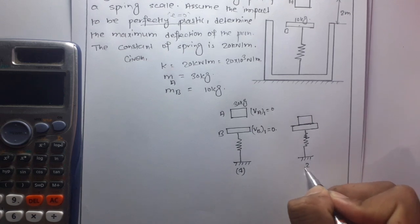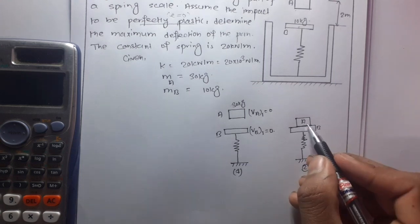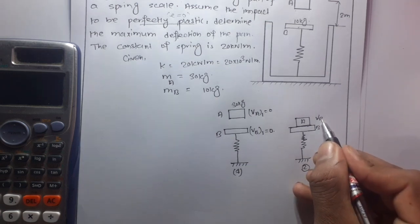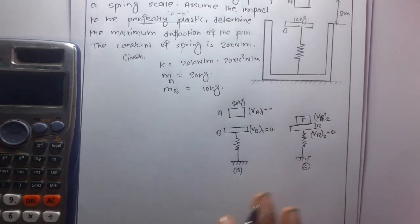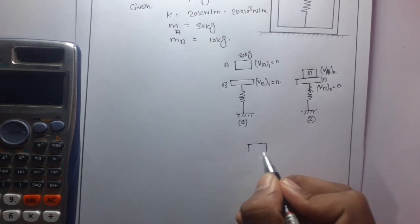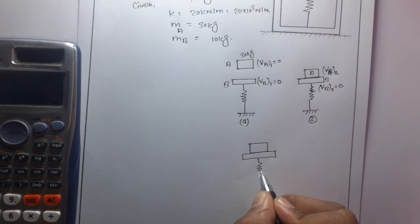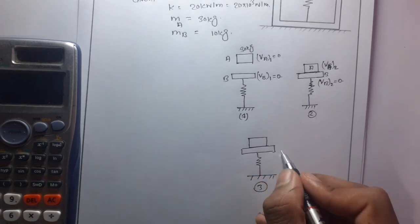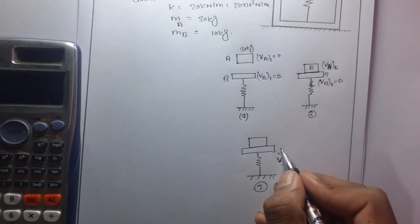Position two is immediately after block A is dropped onto pan B. At that condition, there is a certain velocity vA2, but vB2 is zero immediately after impact. After that, in position three, the combined system moves below with a velocity v3.